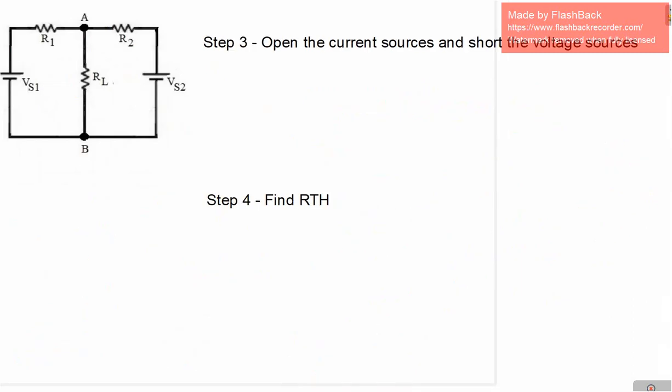Next step. We want to open the current sources and short the voltage sources. So if we do that, we're going to short VS1, we're going to short VS2. And then we just have this circuit here. So we've got our 2 ohm resistor R1, we've got our 8 ohm resistor R2, and we've opened up the load resistor.